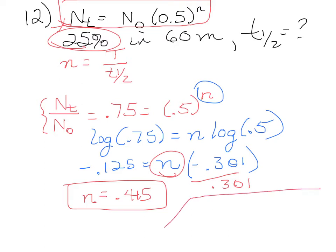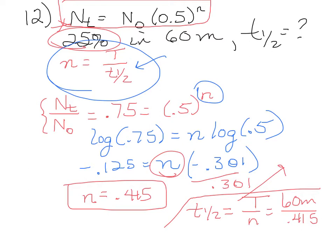The question asked us for the time for one half-life. So, if I go back up to this formula for half-life and rearrange it to solve for half-life, half-life is total time divided by N. Total time is 60 minutes. We just found that N is 0.415. And so, the time for one half-life is 145 minutes.